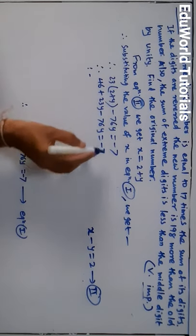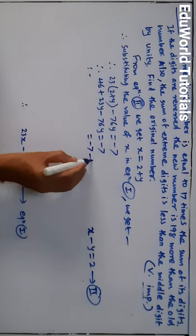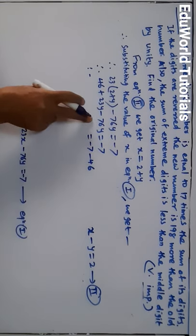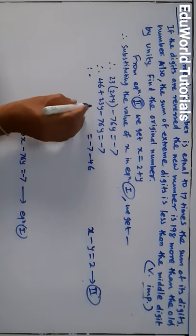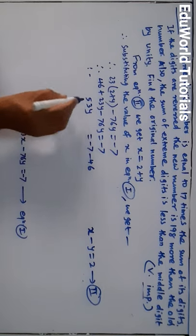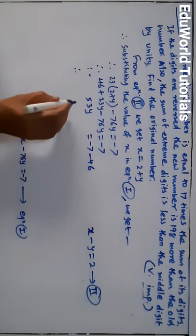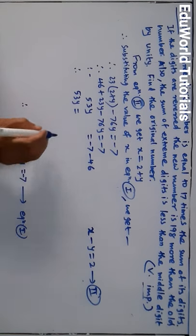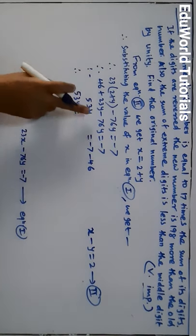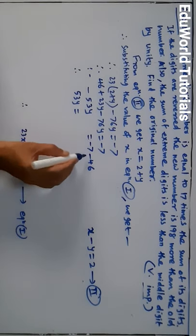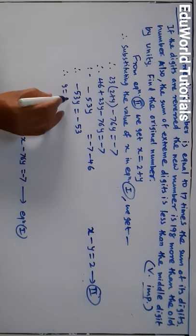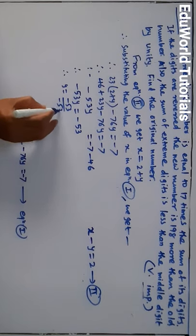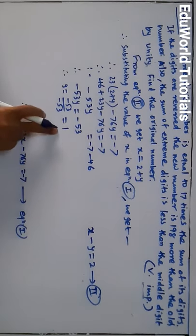Bringing 46 to the right side: 23y minus 76y = minus 7 minus 46. Since we are subtracting a bigger number from a smaller one, this gives minus 53y. So minus 53y = minus 53, and therefore y = minus 53 divided by minus 53, which gives y = 1. This is the hundreds place digit.